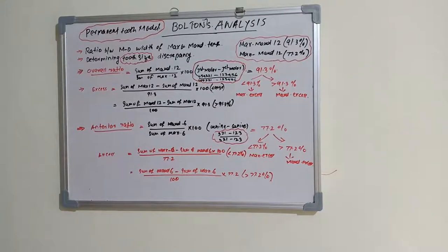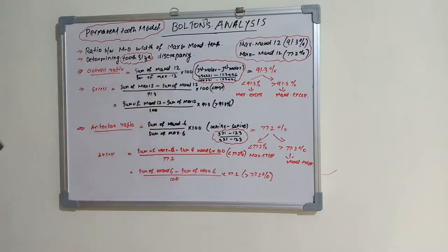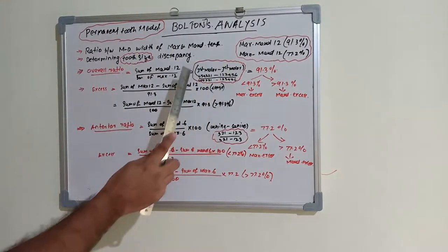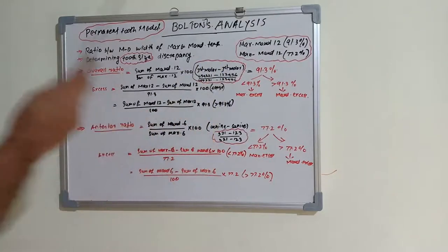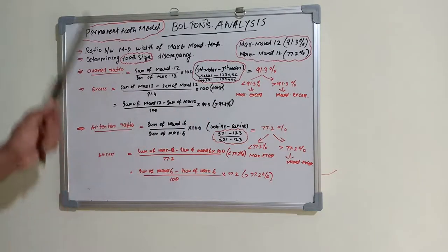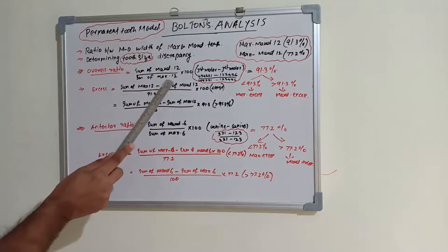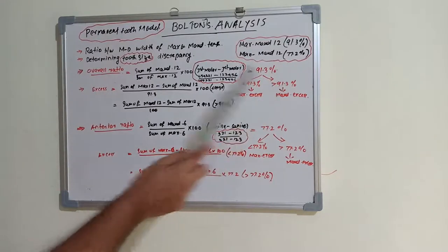Two ratios are put forward by Bolton: the overall ratio and the anterior ratio. The overall ratio is the sum of mandibular 12 teeth divided by the sum of maxillary 12 teeth — that is the mesiodistal dimension — multiplied by 100 to get the percentage. This is molar-to-molar, left molar to right molar, in both maxillary and mandibular arches. Ideally this should be 91.3%, meaning the mandible is lesser compared to the maxilla.